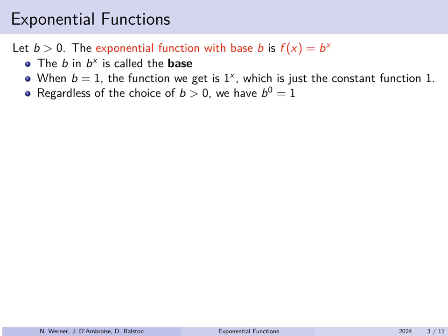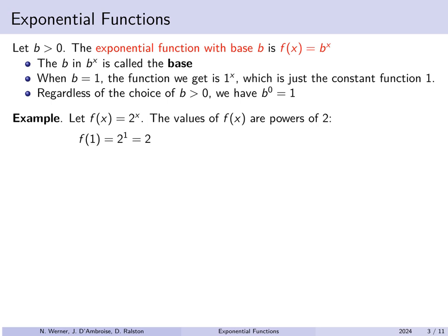However, if we pick any other choice of b, b to the 0 will always be equal to 1. It is important that b isn't 0 because 0 to the 0 is not defined. It's also important that b not be negative when we want to evaluate at certain other values of x. For example, suppose f of x is 2 to the x. If we plug in whole numbers for x, we will get out powers of 2.